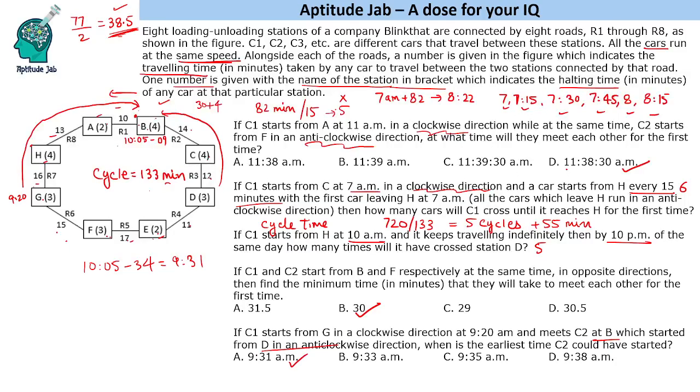So 9:31 is the earliest start for this car. Similarly, if the question was about the latest start, in that case we will assume that the cars meet when this car is leaving this station which is at 10:09 and this car starts at the latest possible and reaches here in 30 minutes. So the answer would have been 9:39. However, the question is about the earliest. So the answer will be 9:31 am.